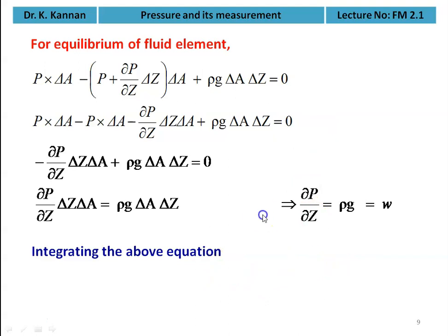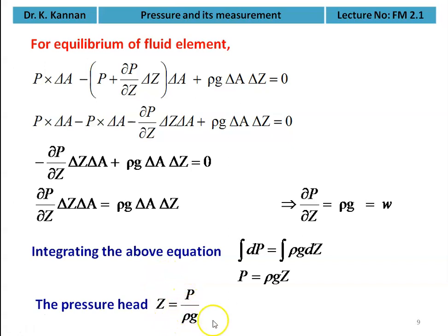Integrating the equation gives p = rho·g·z. Here rho is the density, g is acceleration due to gravity, and z is the height. Pressure at any point equals rho·g·z (or rho·g·h). The pressure head is h = p/(rho·g). This equation p = rho·g·z is very important for all pressure calculations.